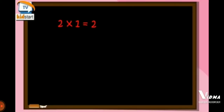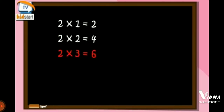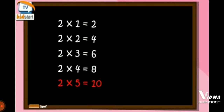Two ones are two. Two twos are four. Two threes are six. Two fours are eight. Two fives are ten. Two sixes are twelve.